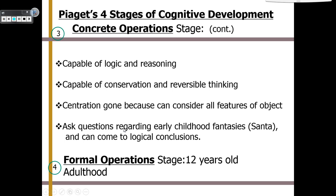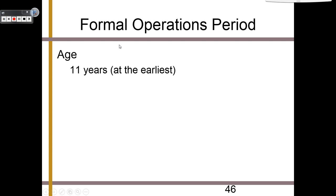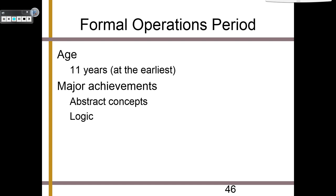Then we have the final stage — the formal operations stage, from 12 years old to adulthood. When you're here, it basically means you're fully developed mentally. You have abstract thoughts understood — you can think of complex concepts like freedom and understand them. The formal operations period begins at 11 years old at the earliest, with major achievements being the ability to understand abstract concepts, logic, reversibility, and hypothetical thinking — things like asking 'what if dinosaurs were still on the planet?' That is a hypothetical situation, and mastering that is what we achieve by the end of this stage.